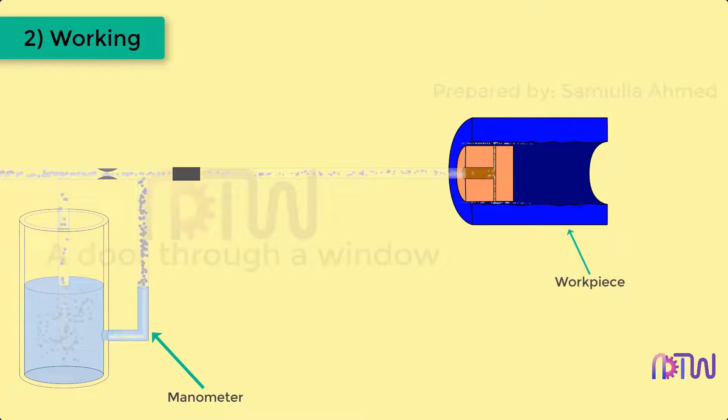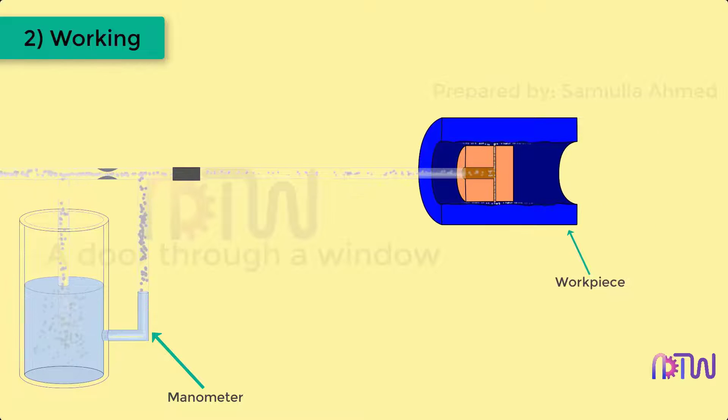When the gauge head of the pneumatic comparator is placed inside a cylinder which is to be examined, the air hits the internal wall of the cylinder and if there are any irregularities in the internal wall, the back pressure in the comparator is created and the water inside the manometer is pushed down. Hence, the water level inside the manometer falls and we get a height difference between the water level of tank and water level of the manometer. This height difference is denoted by delta h.